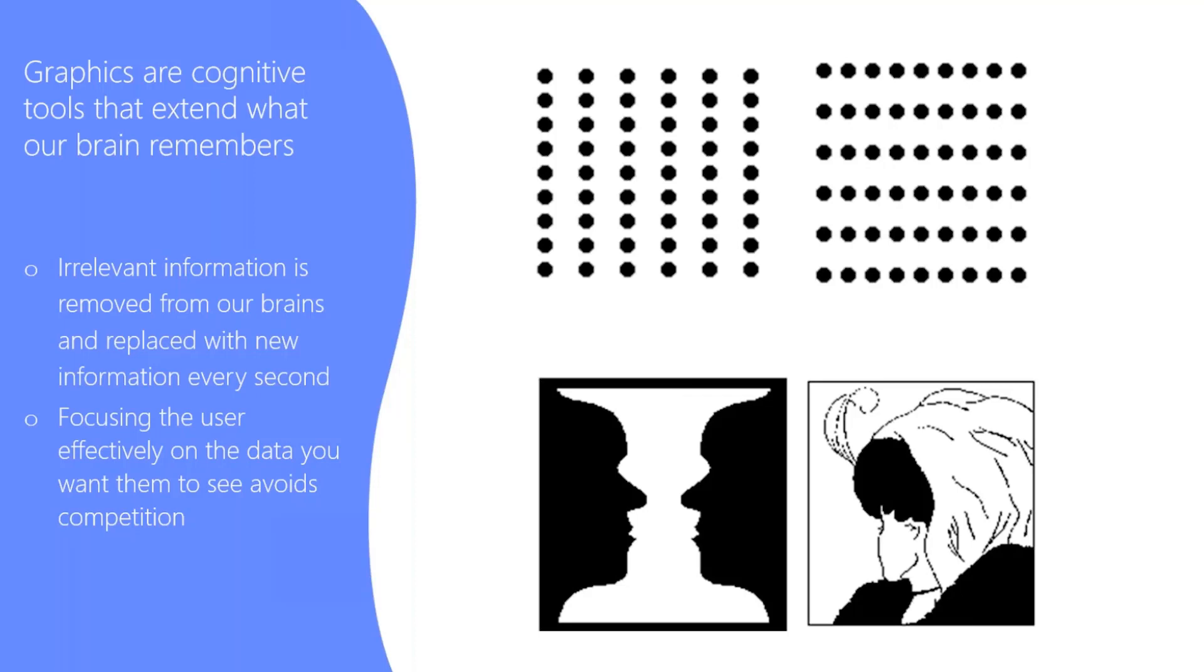Same with the two images below it. Do you see a vase or do you see two people looking at each other? The image on the right, do you see the attractive woman or do you see the older woman who's not as attractive? The brain is focusing on the shapes, the curves, and it's telling us what to actually see.